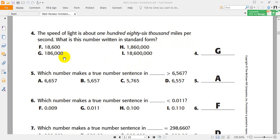So, the right answer is G. Because this number is 18,600, 1,860,000, 18,600,000. So, the right answer is G.